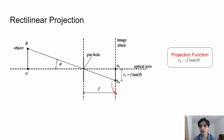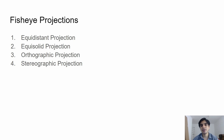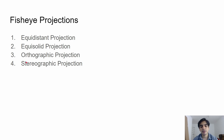In fisheye cameras there are in general four different kinds of projections used: number one is equidistant, number two is equisolid, number three is orthographic, and number four is stereographic projection.